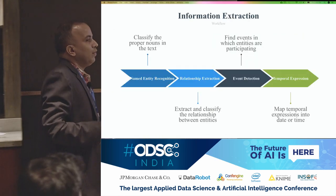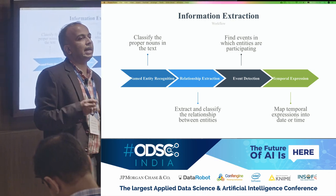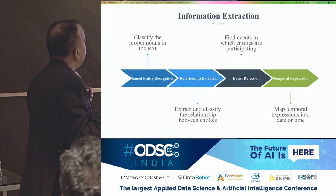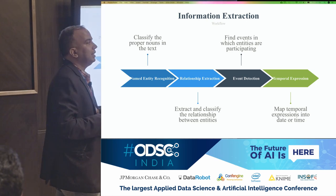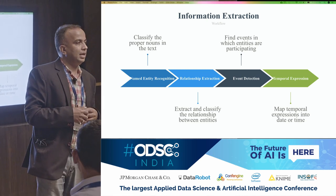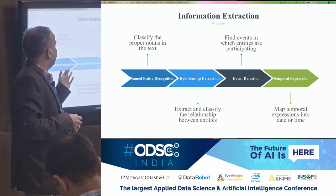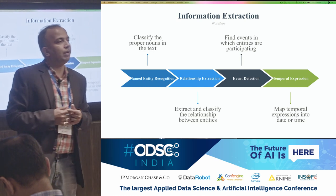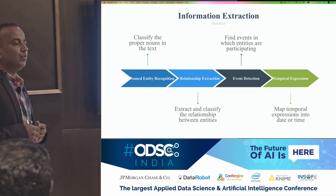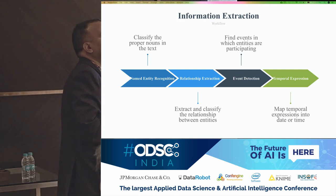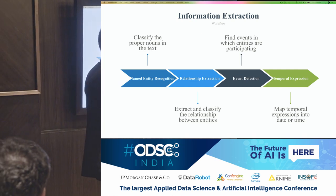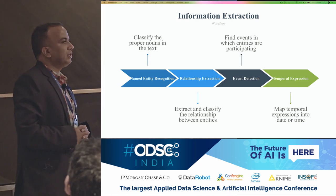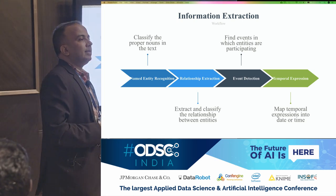Information extraction follows a very specific pipeline. First, you identify the entities of interest in your text — this problem is called named entity recognition. Then, once you have identified the entities, you identify the relationship between them. After that, you identify which events the entities are participating in — for example, an airline is going to give a price hike, or there is going to be a rise in the price of fuel.